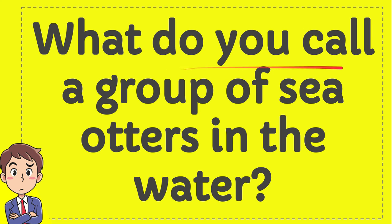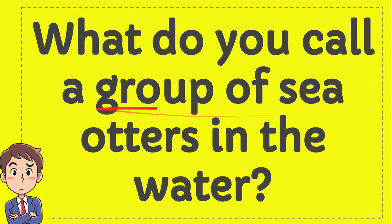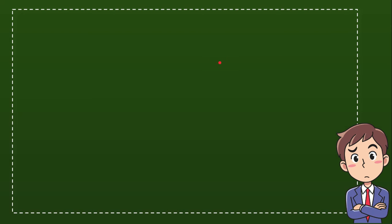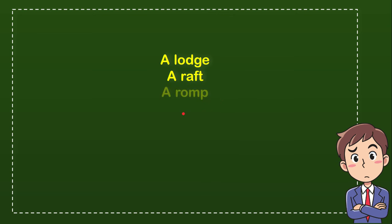What do you call a group of sea otters in the water? I'll give you four options and you try to guess which one is the correct answer. Here is the list of options: the first option is a Lodge, the second option is a Raft, the third option is a Rump, and the last option is a Bavy.